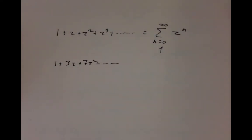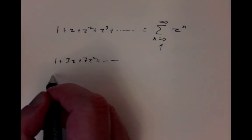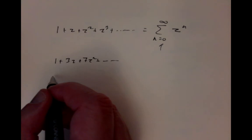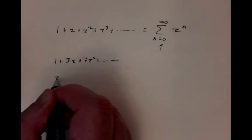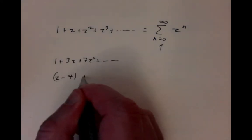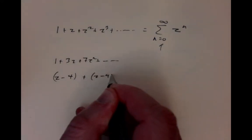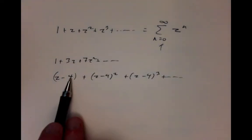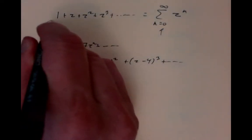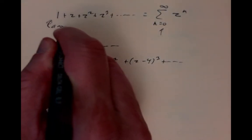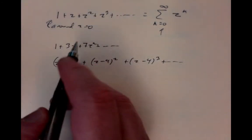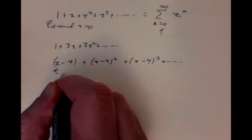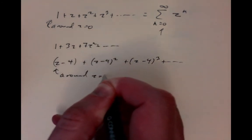Another possibility is we could expand around some other point instead of z equals 0. Consider something like (z minus 4) plus (z minus 4) squared plus (z minus 4) cubed plus dot dot dot. We think of that as being expanded around z equals 4, because the terms are in (z minus 4).